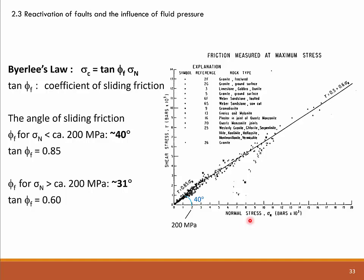The expression of Byerlee's Law is very similar to that of Coulomb's Law of Failure. The critical shear stress equals the tangent of phi_f times the normal stress, where tan(phi_f) is the coefficient of sliding friction and phi_f is simply the angle of sliding friction. For all stresses not exceeding about 200 MPa, the most appropriate angle of sliding friction is 40 degrees. Thereafter, at higher stresses, 31 degrees is the slope angle of Byerlee's Law.